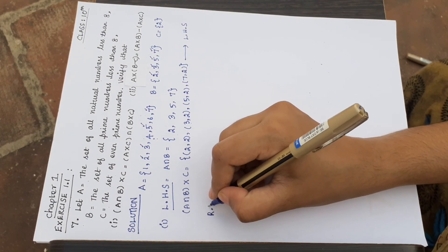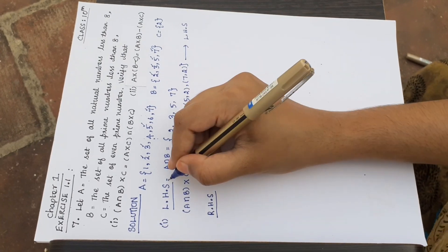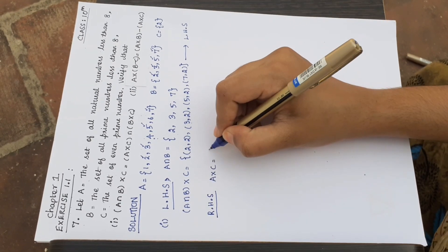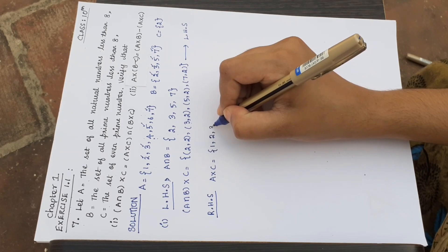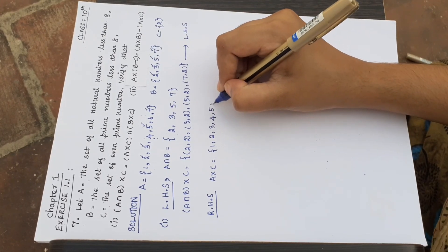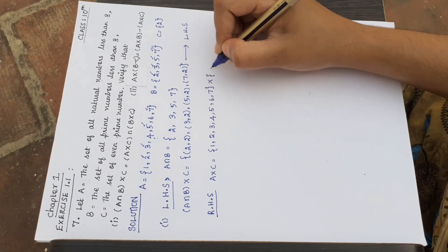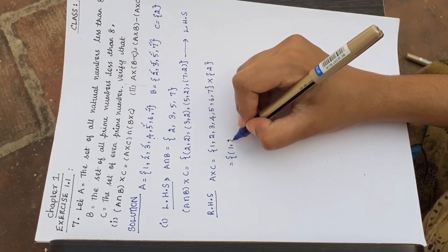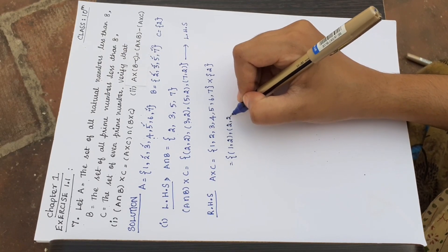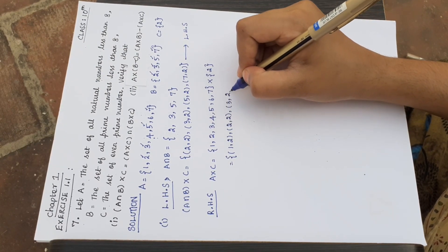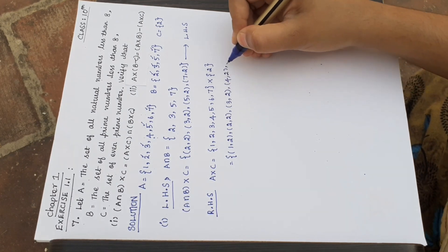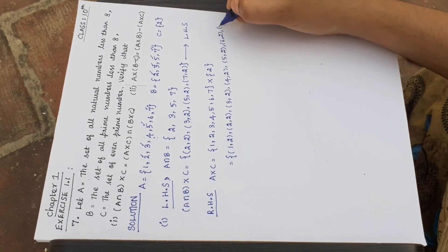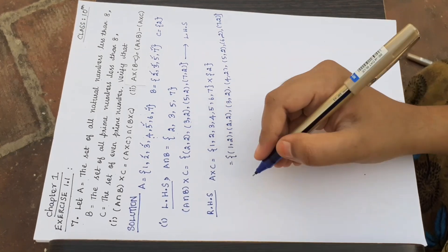Now prove the right-hand side. First find A×C. A = {1, 2, 3, 4, 5, 6, 7} cross C = {2}. So we get: (1,2), (2,2), (3,2), (4,2), (5,2), (6,2), (7,2). This is our set A×C.